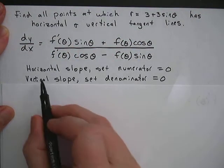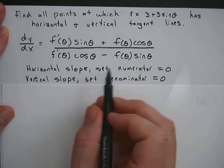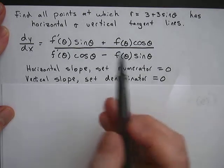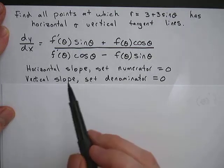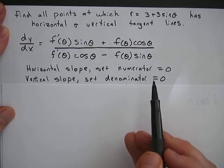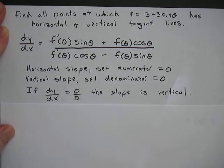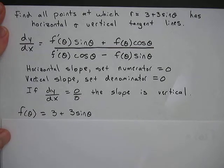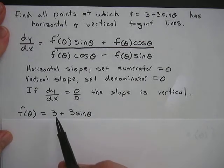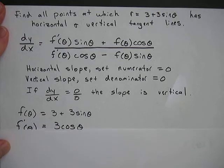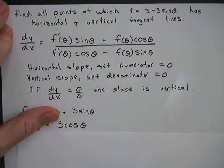Keep in mind that to find the horizontal slope, we set the numerator equal to 0 — that's the top. And for a vertical slope, we set the denominator equal to 0, which is the bottom. And if you happen to get a place where both the numerator and the denominator are 0, then the slope will be vertical. So let's start with the horizontal tangent line.